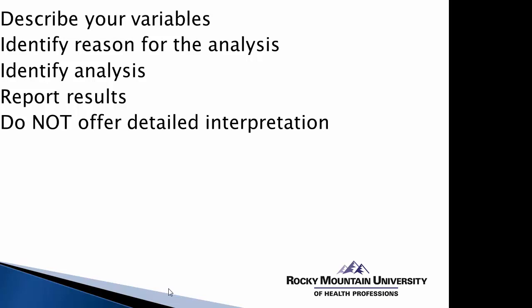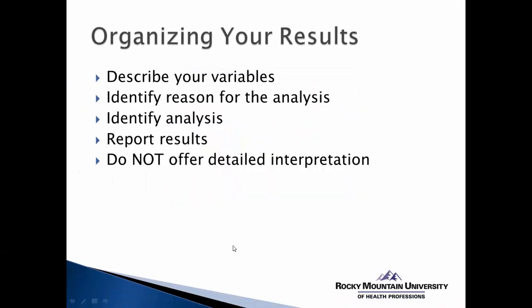We need to describe and identify the precise analysis that was performed. Regression has many different variations and types of techniques that could be utilized, so we'll need to very explicitly describe exactly what type of regression we performed. We then want to report the results and organize them in a way that tells your reader exactly what it was you did, why you did it, and what the results were. It should also be pointed out that this is not the area in which you offer detailed interpretation as to why things turned out the way they did — your job is to basically give the what. This is the information that was gathered from the analysis.